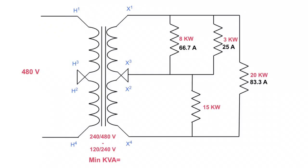Now this is the tricky one. We've got a 20-kilowatt load, but it is across line one and line two, so this is a 240-volt load. So I'm going to take 20 kilowatts divided by 240 volts — do not get caught in the trap of using 120 again — and you're going to get 83.3 amps. Last, we've got 15 kilowatts connected to the 120-volt load because it's connected to the neutral. 15 kilowatts divided by 120 gives you 125 amps.